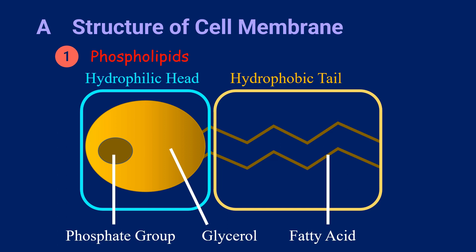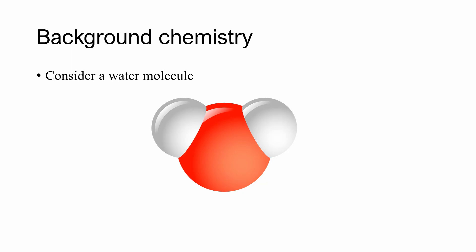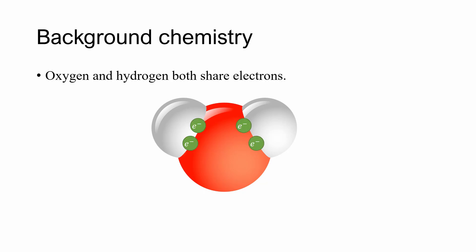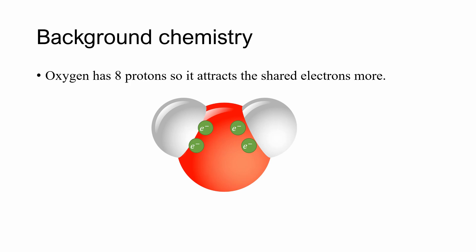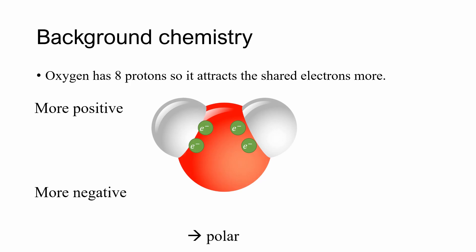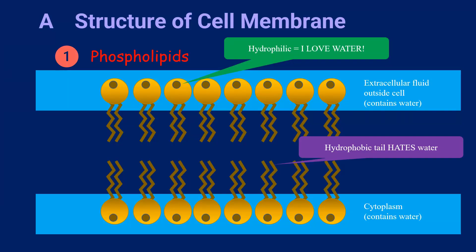But why will it be water-loving? Consider a water molecule. There are hydrogen atoms and oxygen atoms. Oxygen and hydrogen both share electrons. Oxygen has eight protons, so it attracts the shared electrons more. So on the side of hydrogen, that will be more positive, and on the side of oxygen, it will be more negative. This is a polar substance. A polar substance likes a polar substance, and a non-polar substance likes a non-polar substance. As the phosphate group is polar, the head of the phospholipid molecule will be polar. They like water, as water is a polar substance.